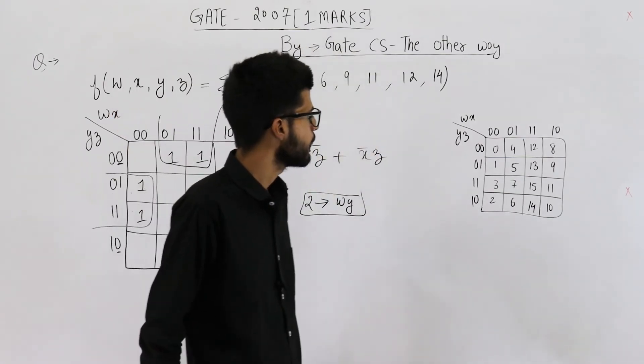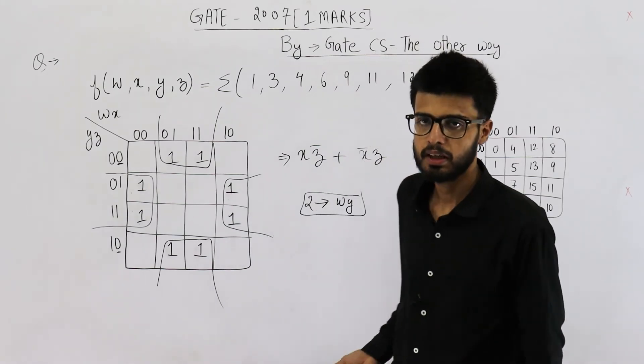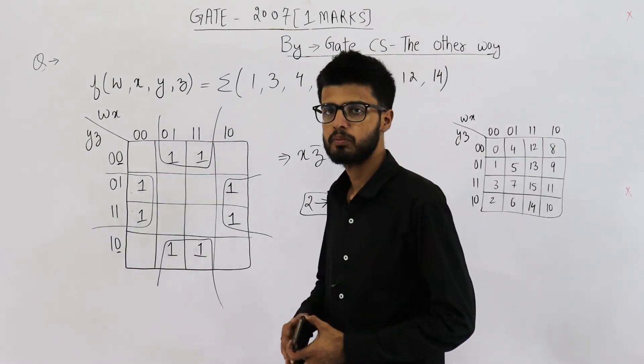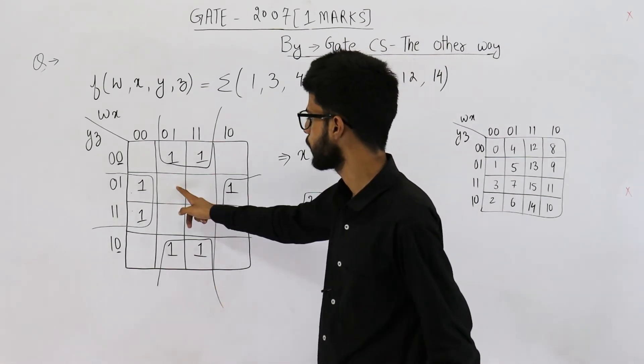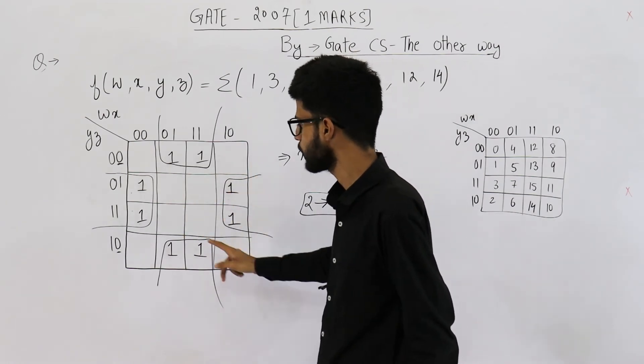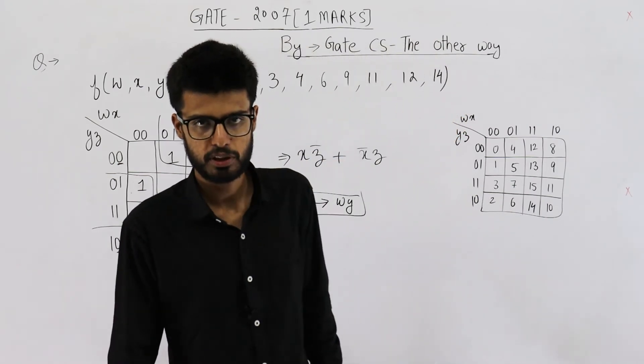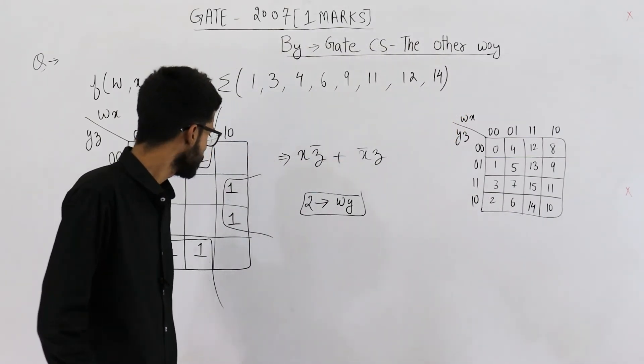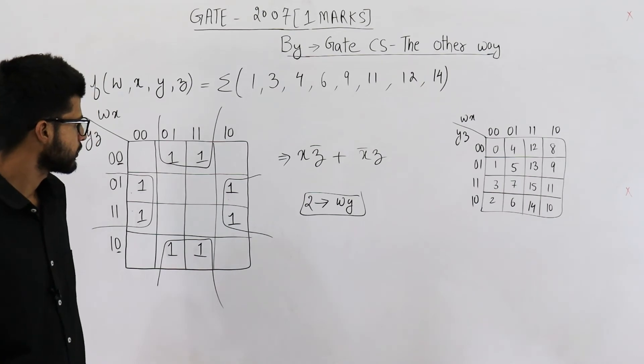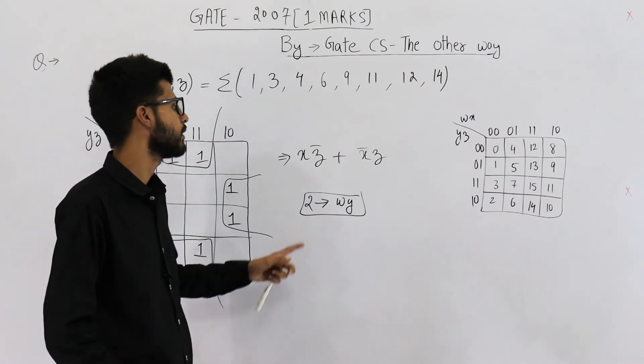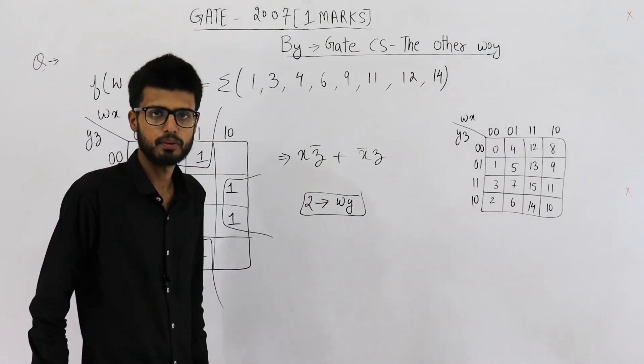One more thing. I found out the minimal SOP. You can also consider minimum POS. That means you can write zeros in these four columns as well as these four corners and you can minimize it for finding out the POS. So even if you consider max terms, still it will be dependent on only two variables.